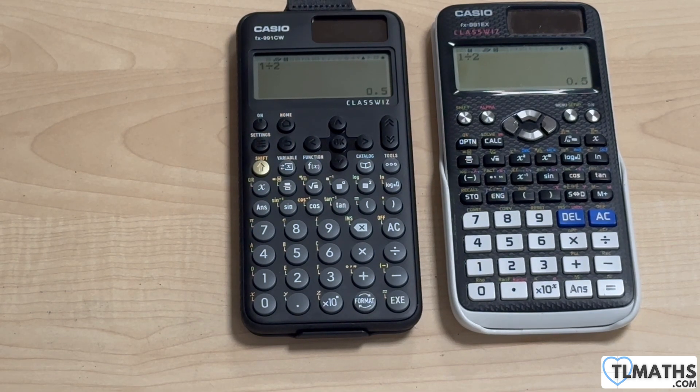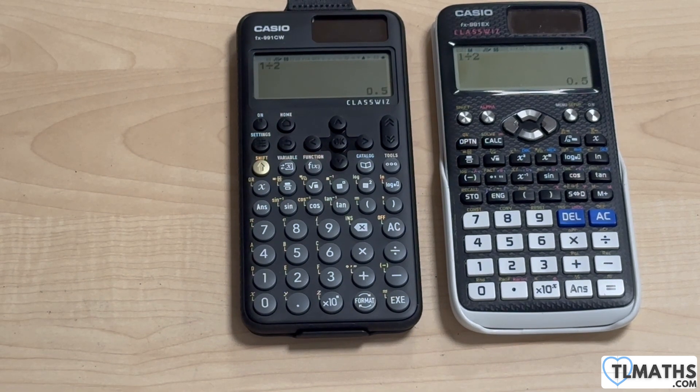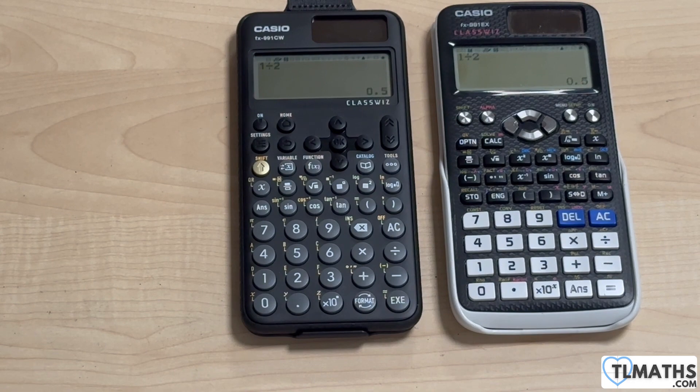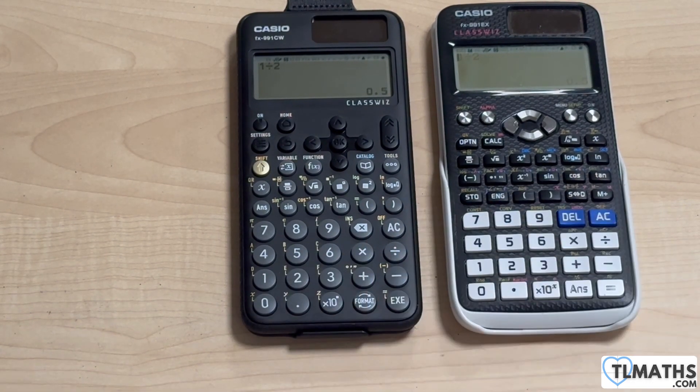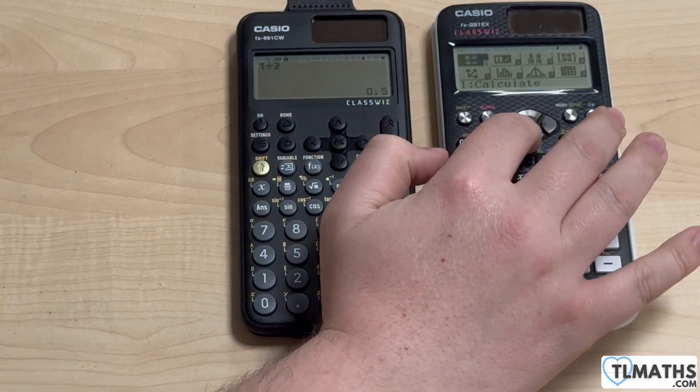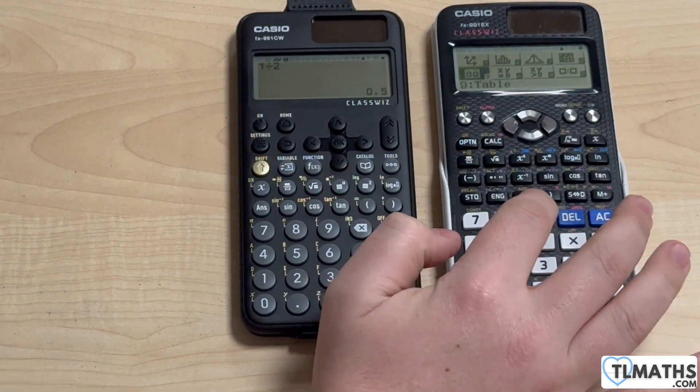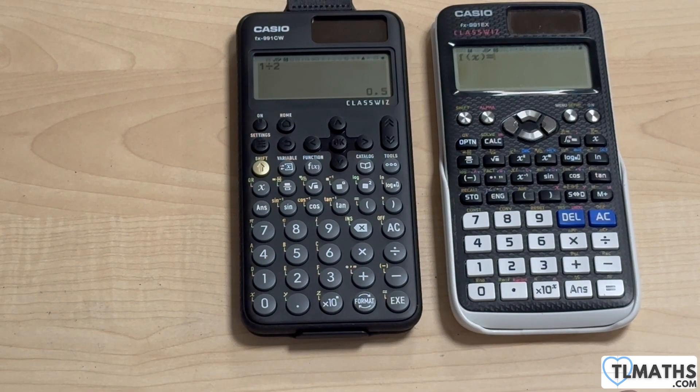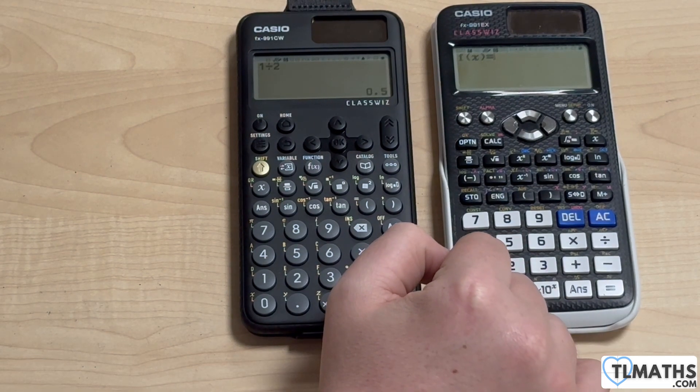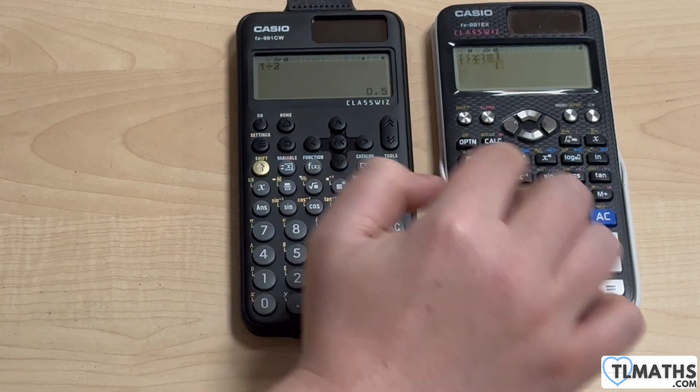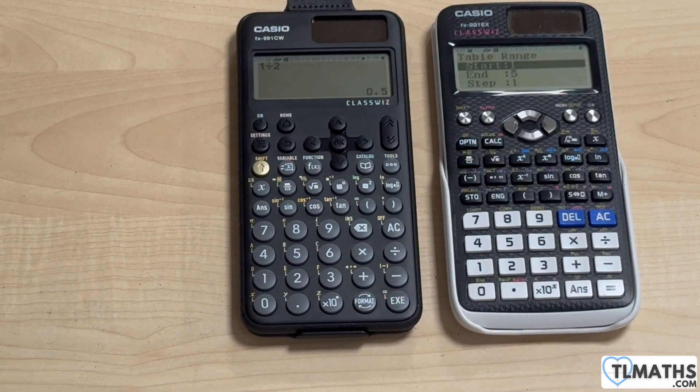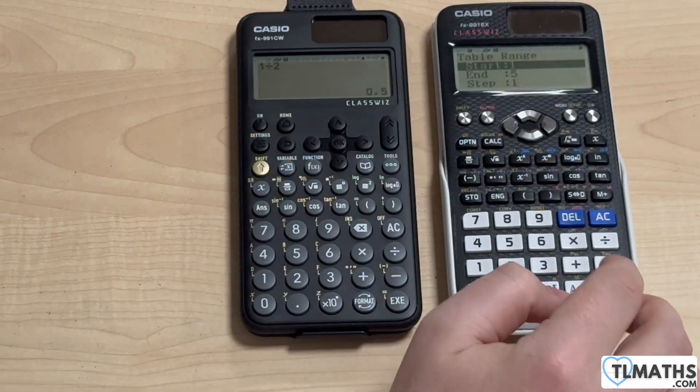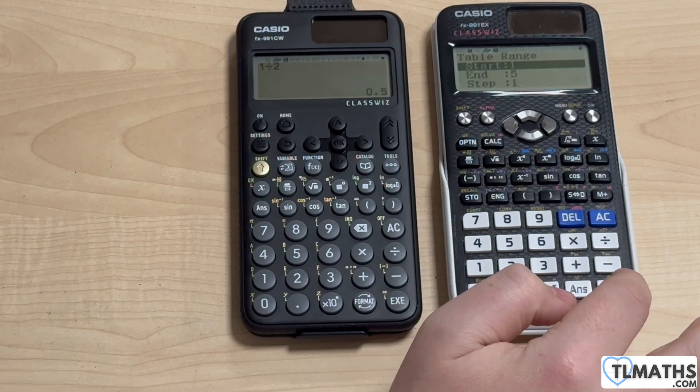One of the things I was using today because we're looking at the trapezium rule, and so for the trapezium rule I quite like to get my students to use the table function on the ClassWiz. Now the table function on the ClassWiz, just go to menu and then I go down to number 9 for table. And let's say I had, let's just go with 1 over x. So 1 over x in my function, I don't need a g of x. Table range, start, end, and step. Let's just keep it as 1 to 5 with step of 1.